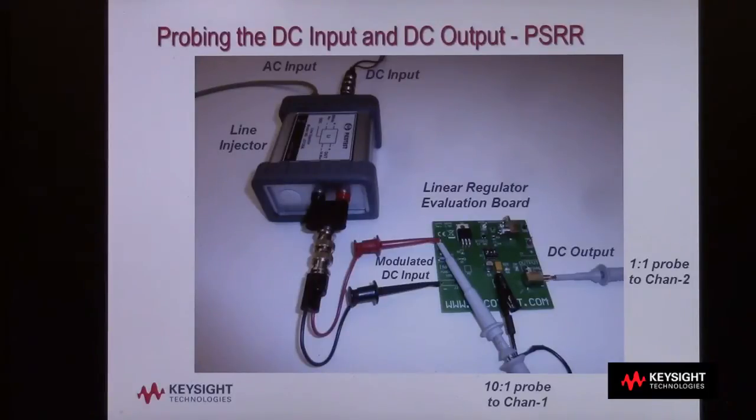Probing is pretty simple. I've got my standard 10 to 1 passive probe connected to the modulated DC input. Probing the output is not as simple though. An AC component on the DC output is going to be an extremely low level signal. If I've got a good regulator, the output signal level is going to be sub millivolts peak to peak.